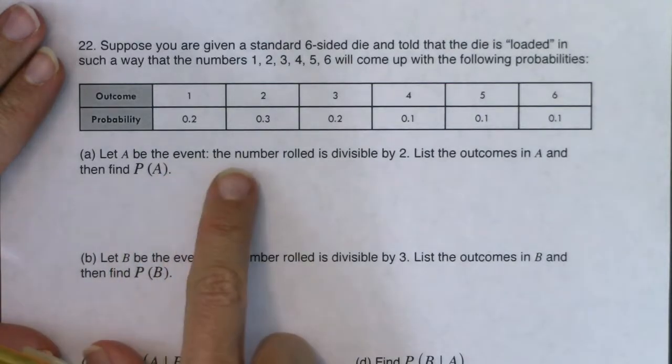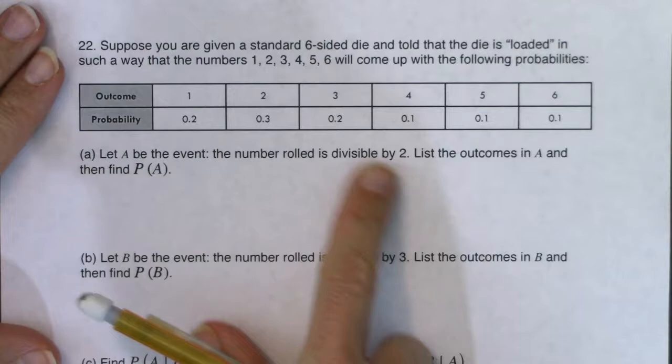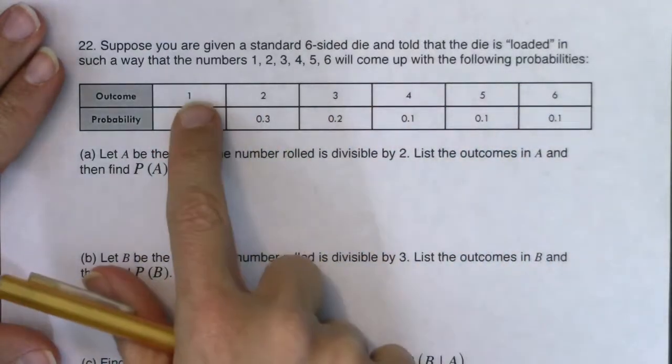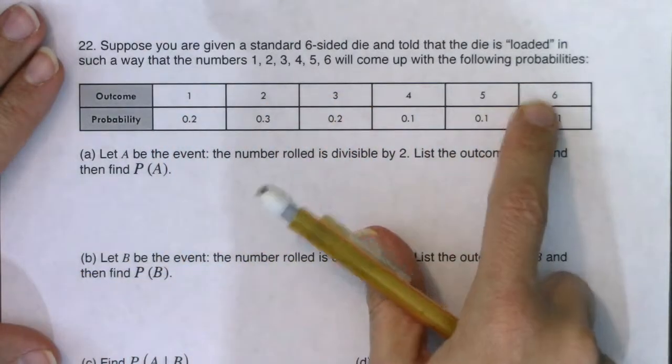And it says let A be the event that the number rolled is divisible by two. So let's go through our outcomes, right? Our outcomes are either one, two, three, four, five, or six.